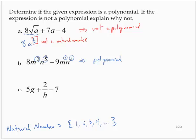Looking at exercise C, I'm given 5g plus 2 over h minus 7. That term 2 over h is the same as 2 times h to the negative 1st power, and negative 1 is not a natural number. So therefore, this expression is not a polynomial.